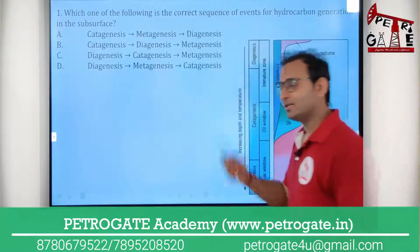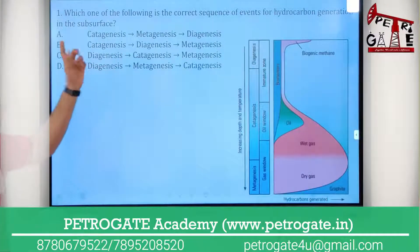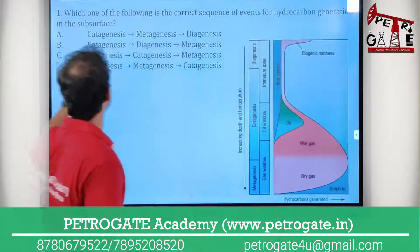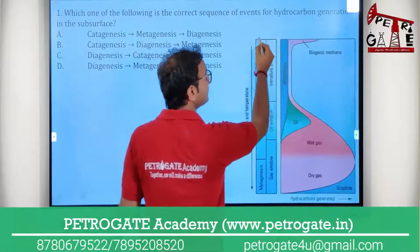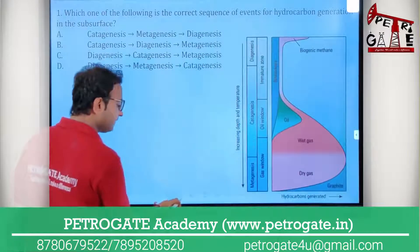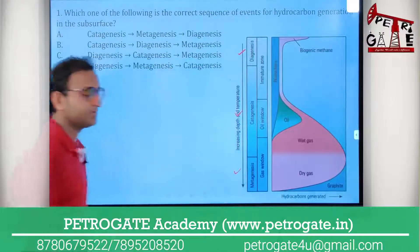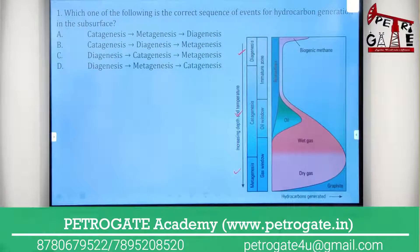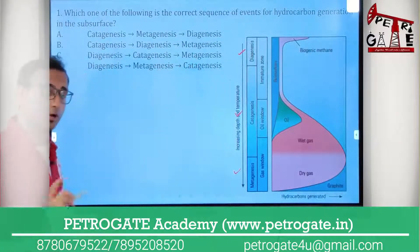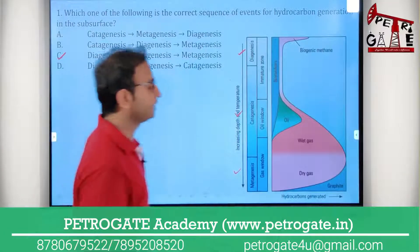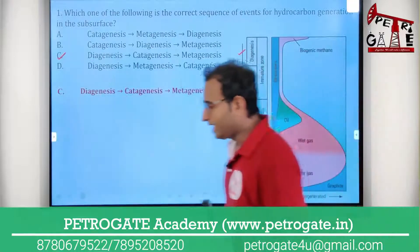The question is asking for the correct sequence of events of hydrocarbon generation in the subsurface. The first incident which happens is diagenesis, then catagenesis, and then metagenesis. So the right option is C: diagenesis, catagenesis, metagenesis.